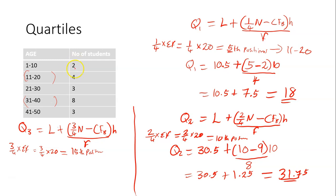So let's locate the 15th position. This is 2. Plus 4 gives 6 — not yet up to 15. Plus 3 gives 9 — not up to 15. Then plus 8 gives 17, which is up to 15 already. So the third quartile class is also class 31 to 40.